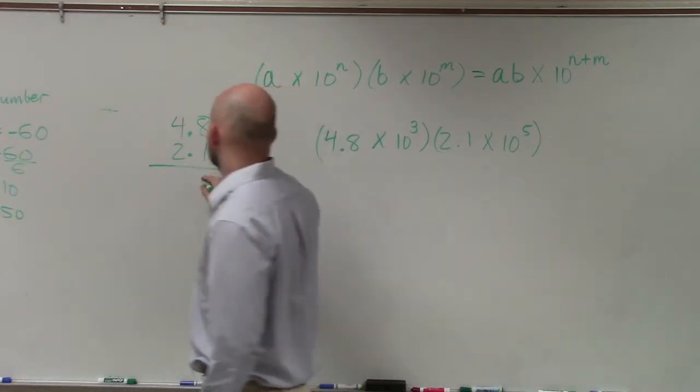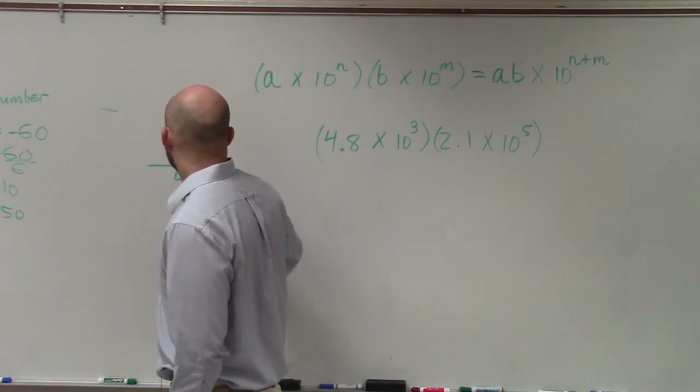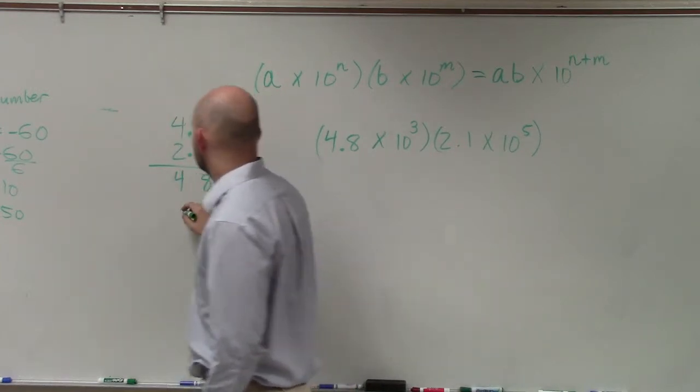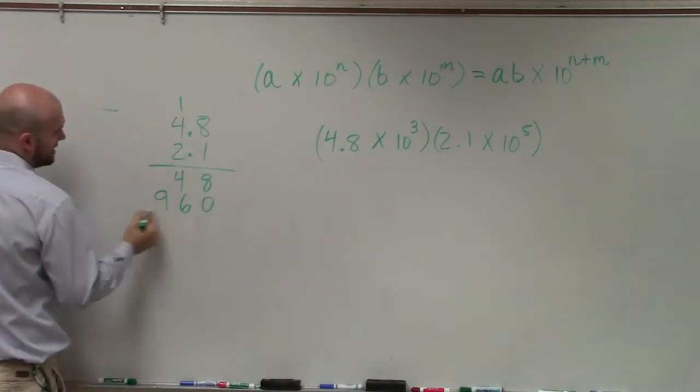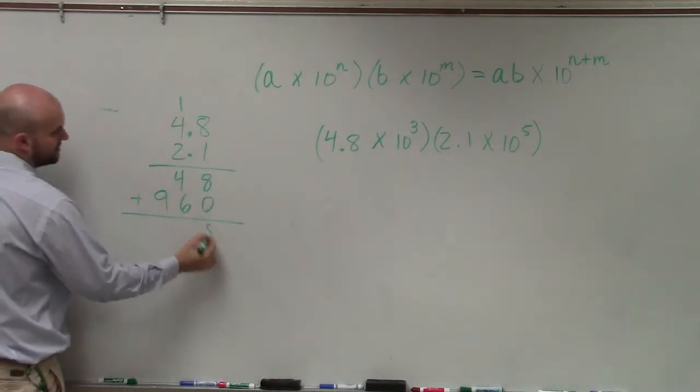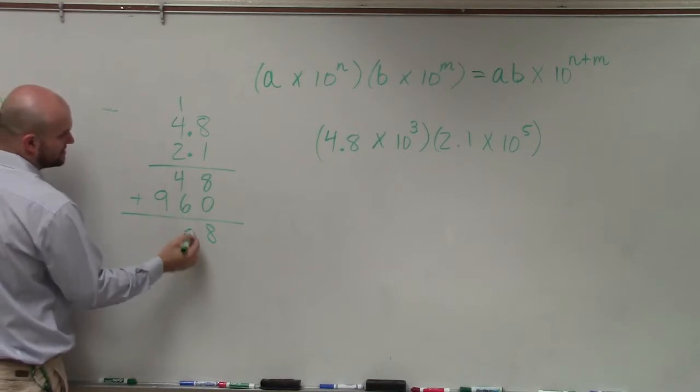1 times 8 is 8. 1 times 4 is going to be 4. 0 placeholder. 2 times 8 is 16. 2 times 4 is 8, plus 1 is 9. Add my two rows. 8 plus 0 is 8. 4 plus 6 is 10.